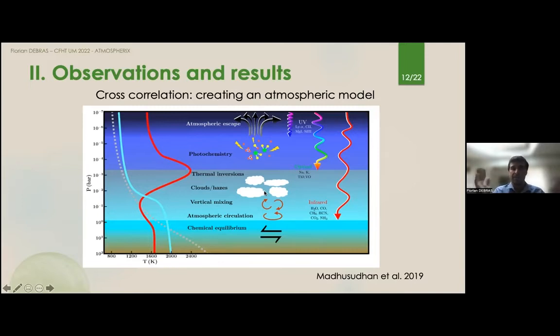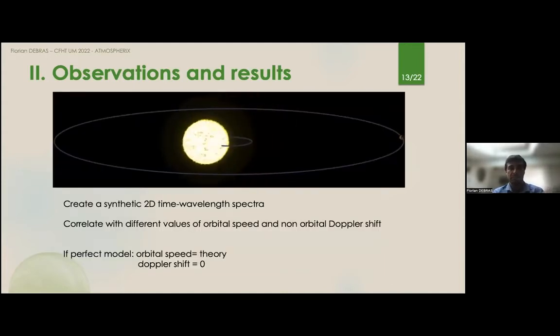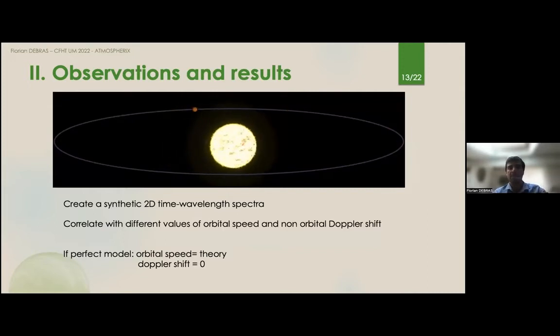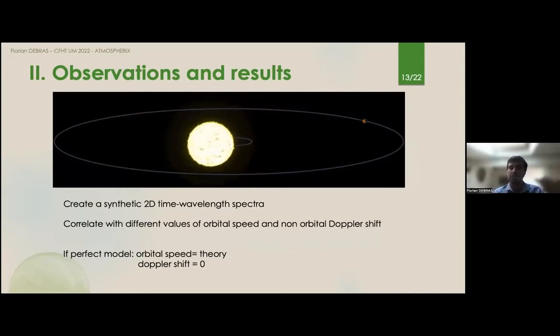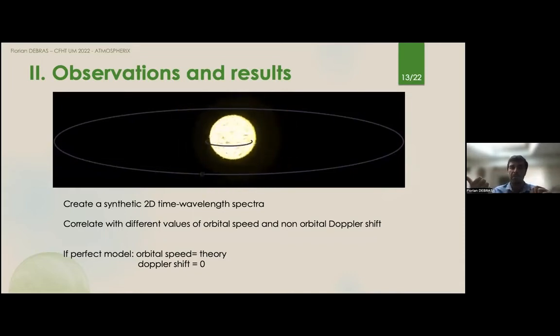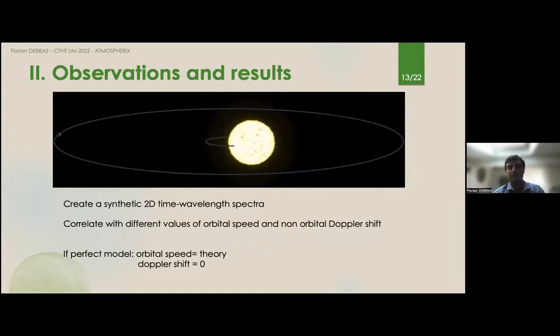Once we have this static synthetic model, we need to make it evolve with time exactly as the planet is orbiting its star. At the beginning of the transit, the planet is going towards the observer, so you have a blue shift of your spectrum, and at the end of the transit, the planet is going away, so you have a red shift. This leads to a global slope in the time-wavelength space, and so we create this slope.